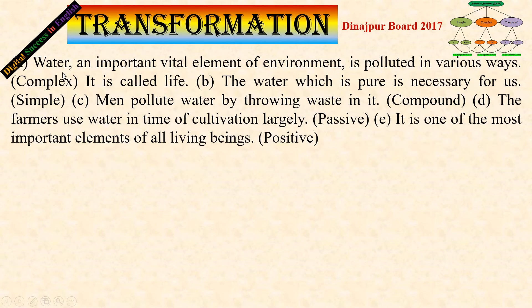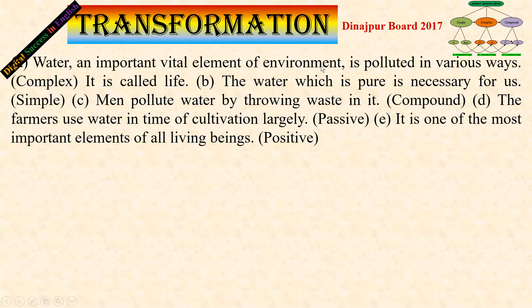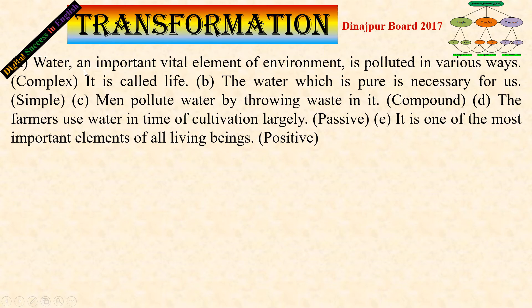Okay, let's start. Number A: Water, an important vital element of environment, is polluted in various ways. Water is polluted in various ways.